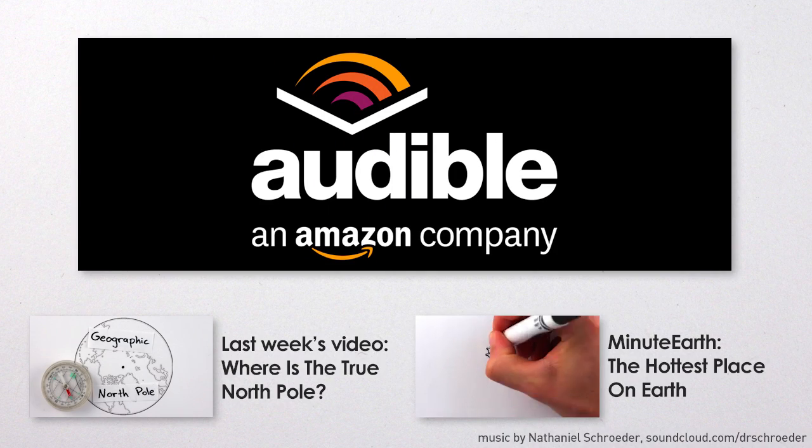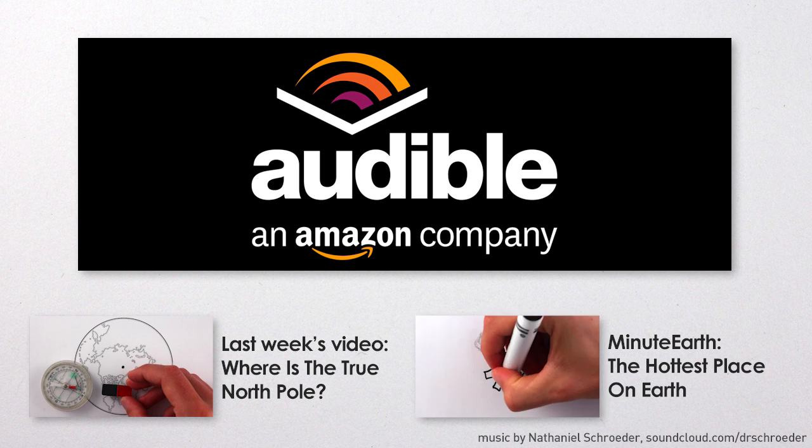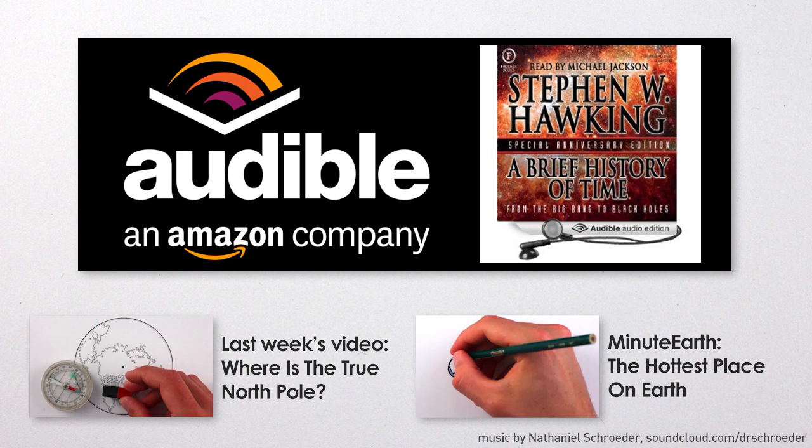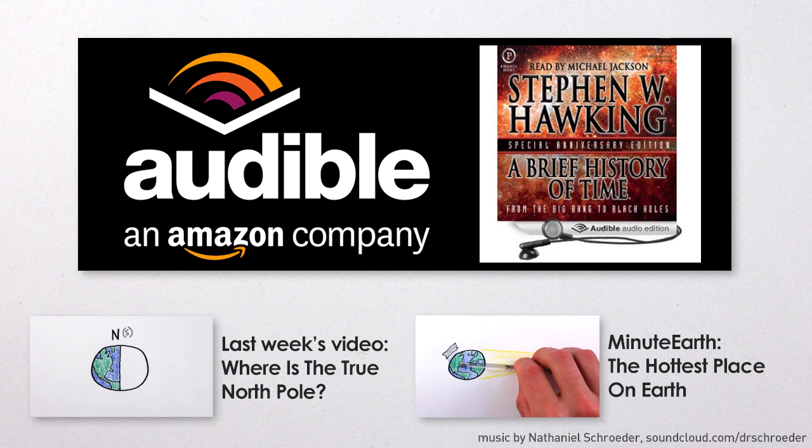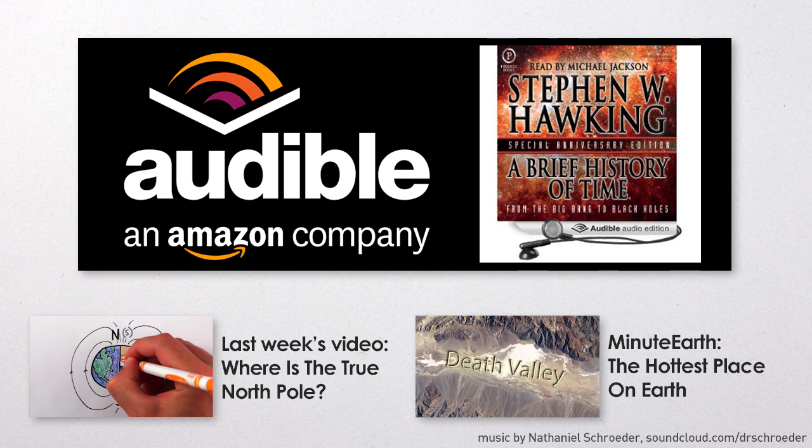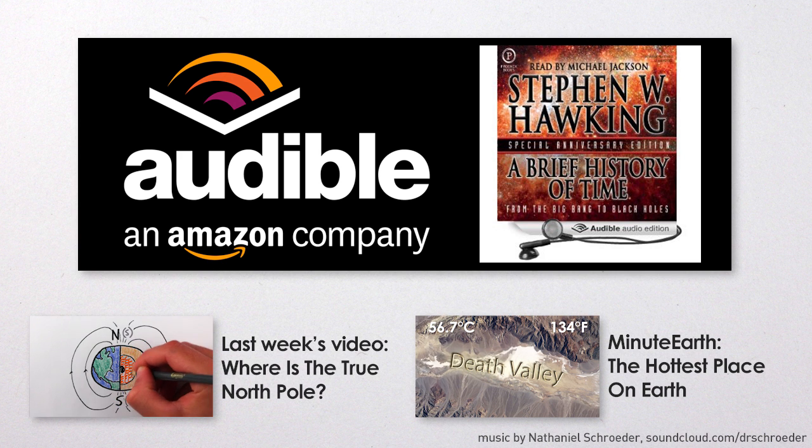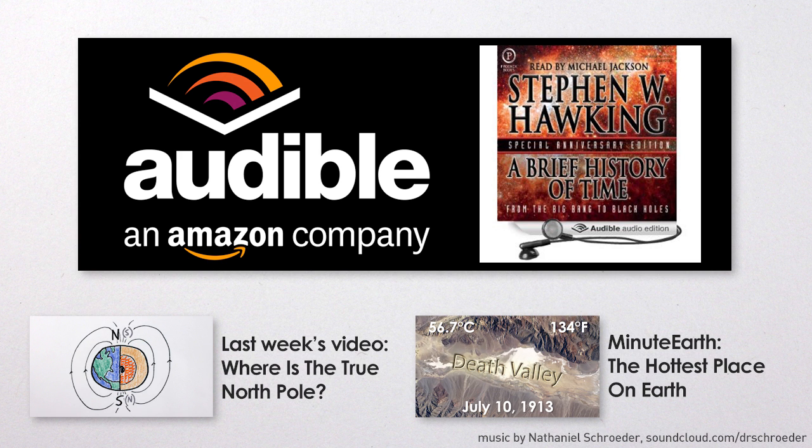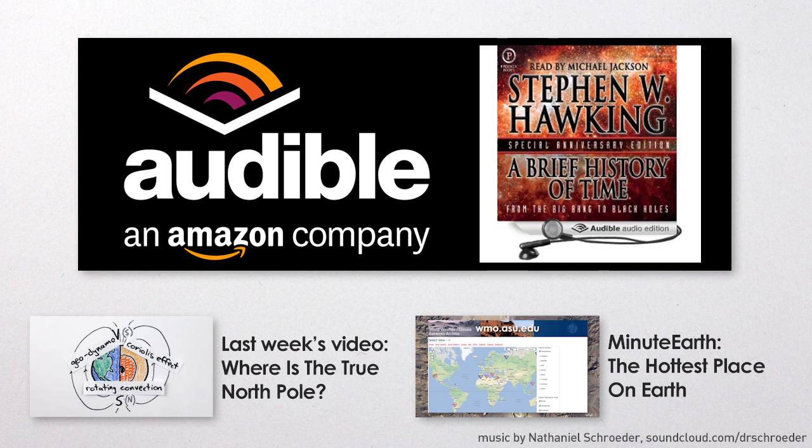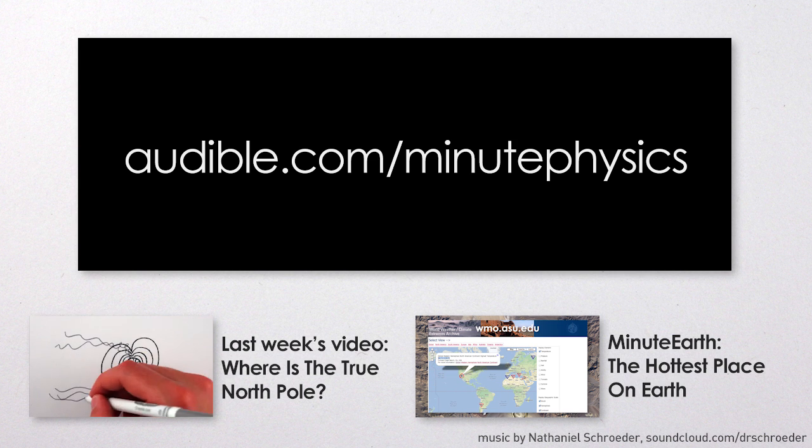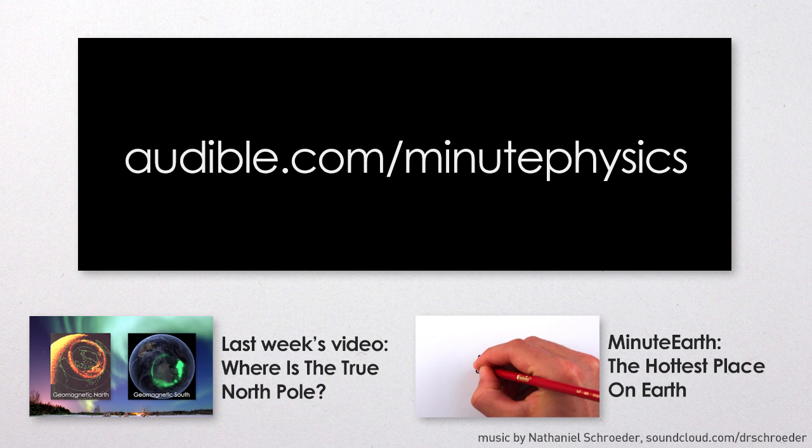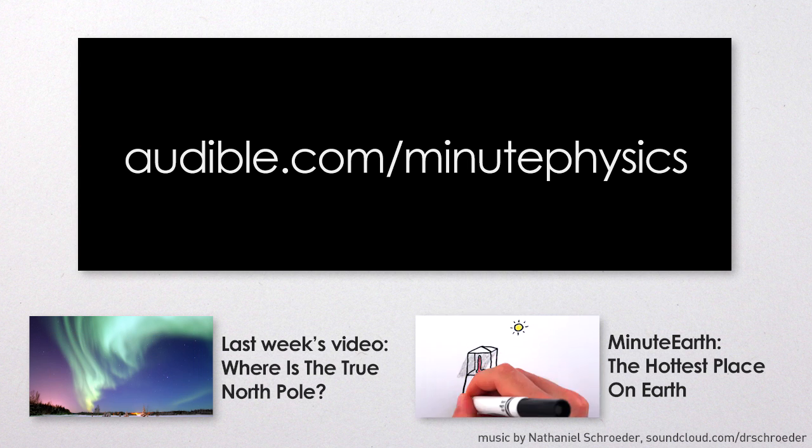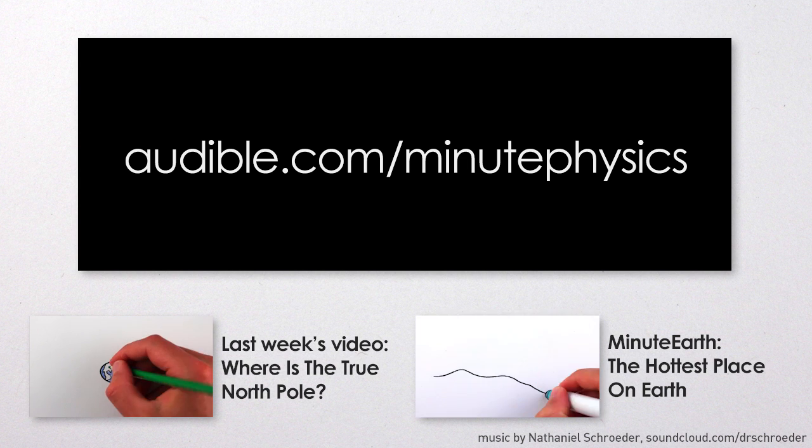This episode of Minute Physics is supported by Audible.com, the leading provider of audiobooks across all types of literature, including fiction, nonfiction, and periodicals. A Brief History of Time by Stephen Hawking is an excellent and time-tested book about the history of the universe, where we all come from, where we're going, and so forth. You know, things you might be curious about. You can download this audiobook, or another of your choice, for free at audible.com/minutephysics. Again, thanks to Audible for making it possible for me to keep producing Minute Physics, and for giving you a free audiobook at audible.com/minutephysics.